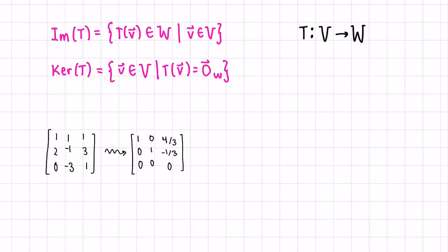The image of a transformation, since transformations can be represented as a matrix, would be equal to the image of the matrix, which is equal to the column space of the matrix A, which we've already talked about. Since we're looking at T of V, the transformed version of our vector V, this is a subspace of W.